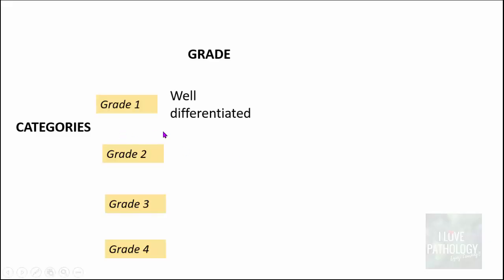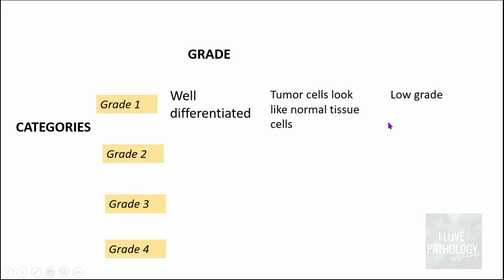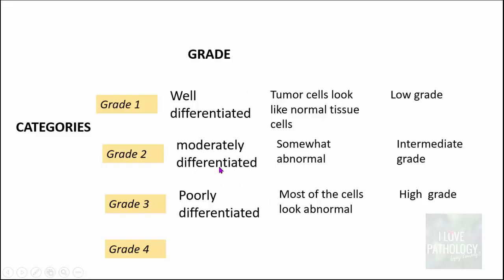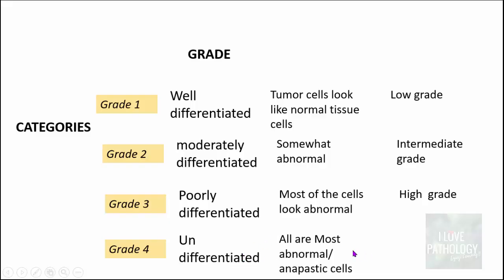Grade 1 means well-differentiated tumors — the tumor cells look like normal tissue cells, and that is why they are low-grade tumors. Grade 3 are poorly differentiated tumors where most cells look abnormal, and they are high-grade tumors. Tumors in between are called moderately differentiated — the cells somewhat look abnormal and are intermediate grade. Grade 4 is called undifferentiated tumor where almost all cells are abnormal; they are highly anaplastic cells and this is the highest grade.